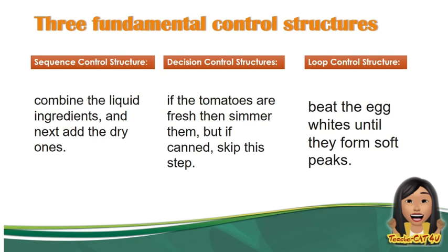Next, for the decision control structure, here is a sample: 'If the tomatoes are fresh, then simmer them. But if they are canned, skip that step.' In the decision control structure, the keyword used is 'if.'